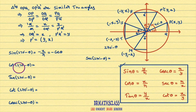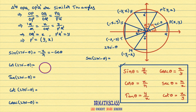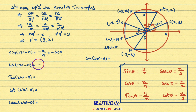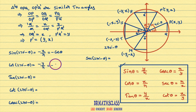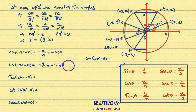Now, cos(270° - θ). Initially, cos θ is defined as the x-coordinate of the point divided by radius of the circle. cos(270° - θ) means the x-coordinate of point M divided by radius of the circle. The x-coordinate of point M is -y, divided by radius of the circle, that equals -y/R. y/R is sin θ. Therefore, cos(270° - θ) = -sin θ.